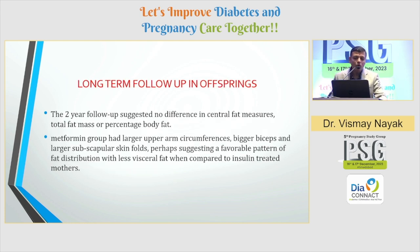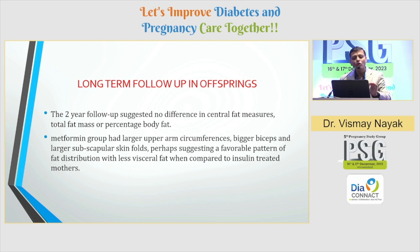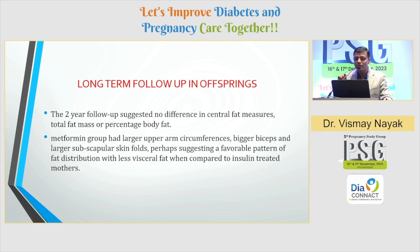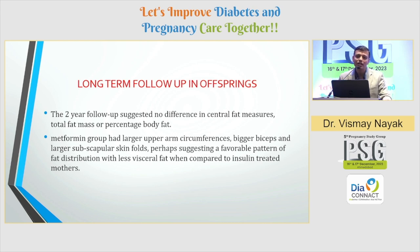What about long-term follow-up? The two-year follow-up study suggested no difference in central fat measures, total fat mass, or percent body fat. The metformin group had larger upper arm circumferences, bigger biceps, and larger subscapular skin folds — perhaps suggesting a favorable pattern of fat distribution with less visceral fat when compared to insulin-treated mothers.